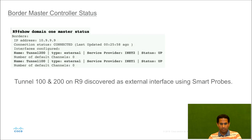On the R9 spoke side, there is no explicit configuration required to identify external interfaces as they will be auto-discovered from the hub master controller router using smart probes. As we can see in this output, on R9 we see that tunnel 100 and tunnel 200 are discovered as external interfaces. They are being discovered using the smart probes which were sent by router R3 acting as the hub master controller.